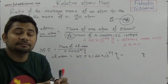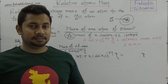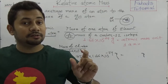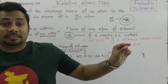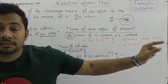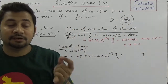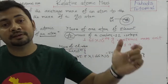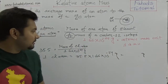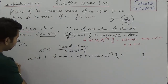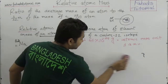So the relative atomic mass of any element is the ratio of the mass of one atom of that element and the one-twelfth mass of the carbon-12 isotope. Now I am giving you one more important thing.